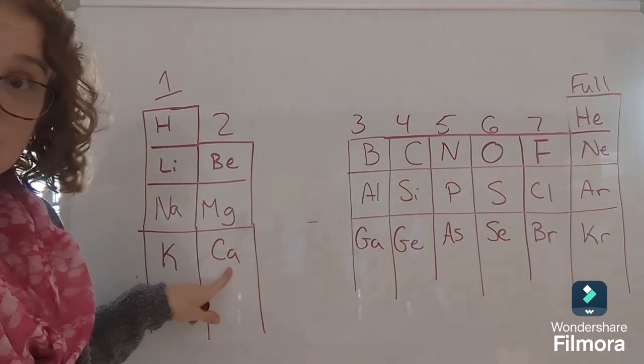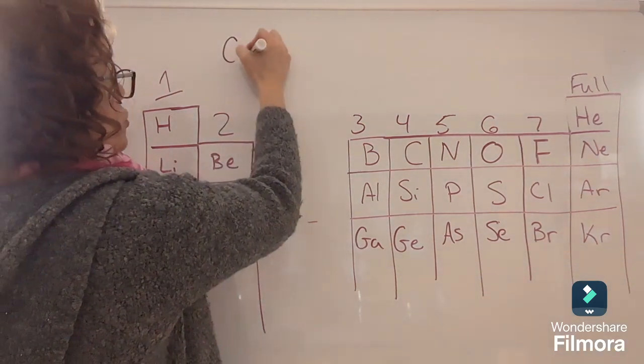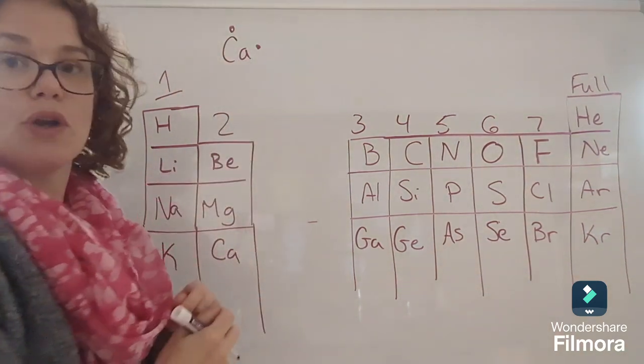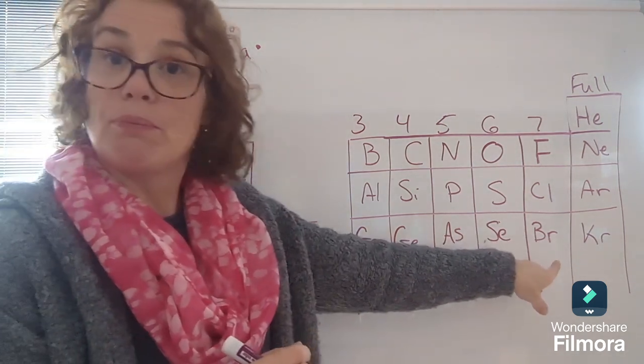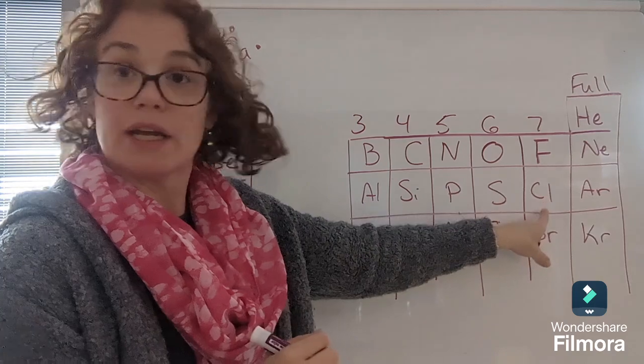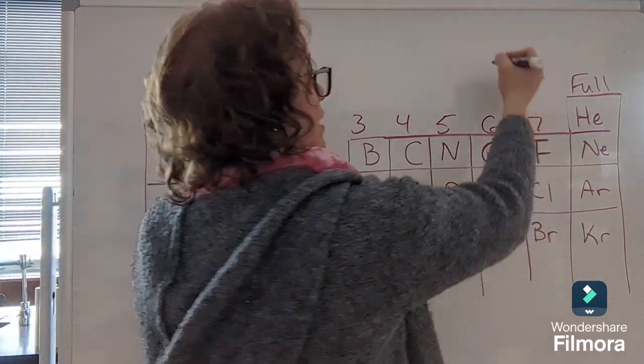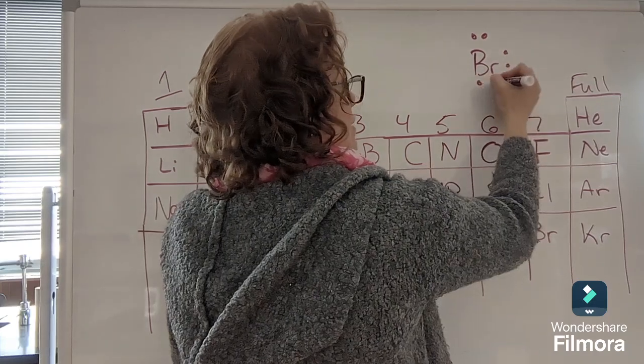For example, if I was going to draw calcium, it has two valence electrons. So calcium's Lewis structure would look like that. If I was going to draw bromine, it is in the same family as fluorine and chlorine. So therefore, it has seven valence electrons. So I would draw it like this.